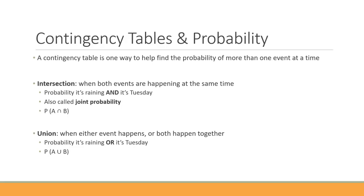A union is when either event is happening or they're happening together. For example, it's the probability that it's raining or that it's Tuesday. It doesn't have to rain on Tuesday — both events don't have to happen together. It's the probability of either event happening, and we write it as the probability of A or B, where 'or' is the regular U symbol.